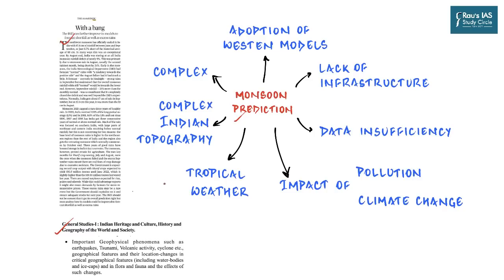Monsoon is a very complex inter-hemispherical and inter-oceanic phenomenon, making predictions very difficult. On top of that, India's topography — comprising the loftiest mountains, expansive deserts, and longest and deepest valleys, surrounded by oceans on three sides — makes the monsoon highly variable in both space and time. Additionally, India has largely tropical weather, and tropical weather is more complicated and more variable than temperate weather, making it inherently harder to predict.